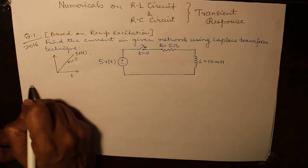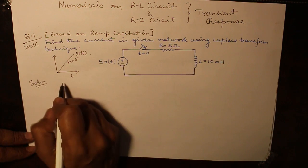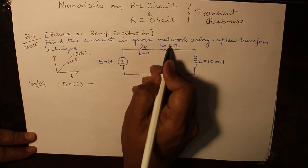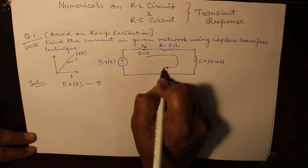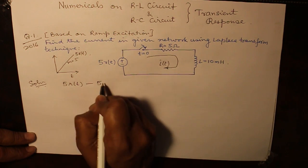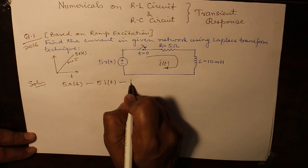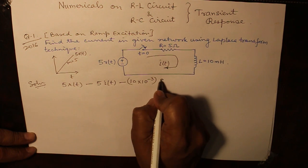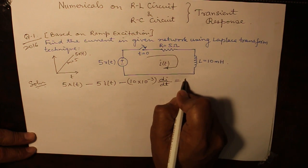Let us write down the equation. My KVL equation: 5RT minus 5 into the current IT minus 10 millihenry, so 10 into 10 raised to the power minus 3 Henry. This is L into DI by DT is equal to 0.